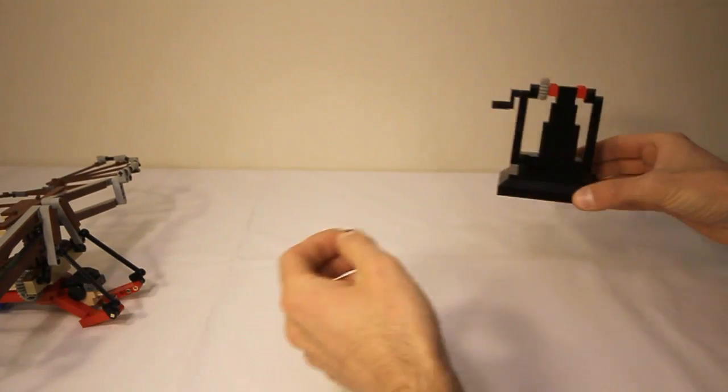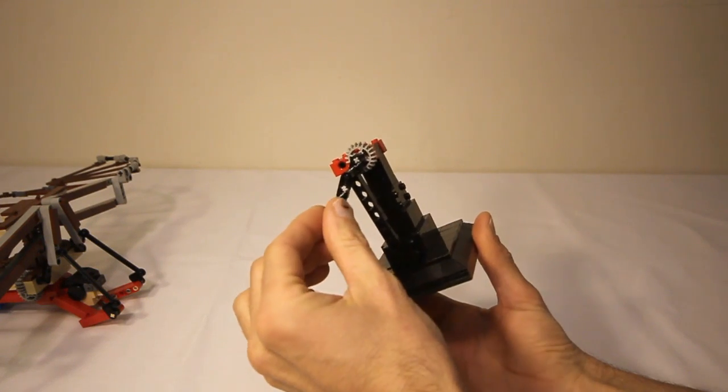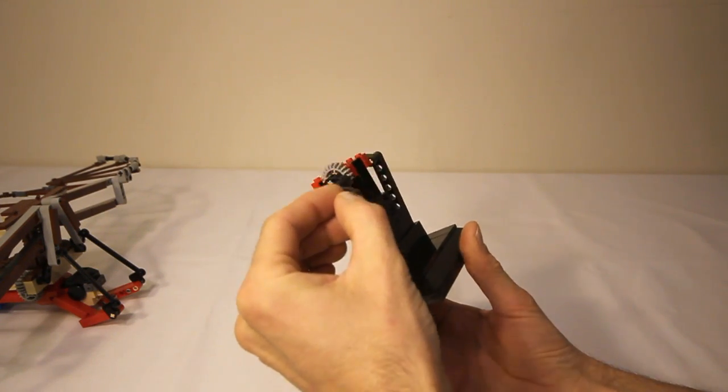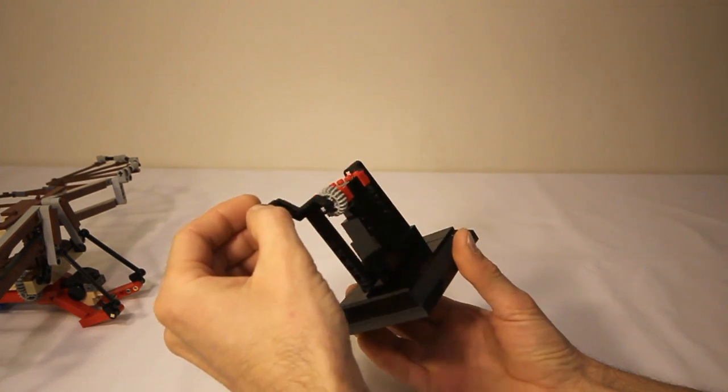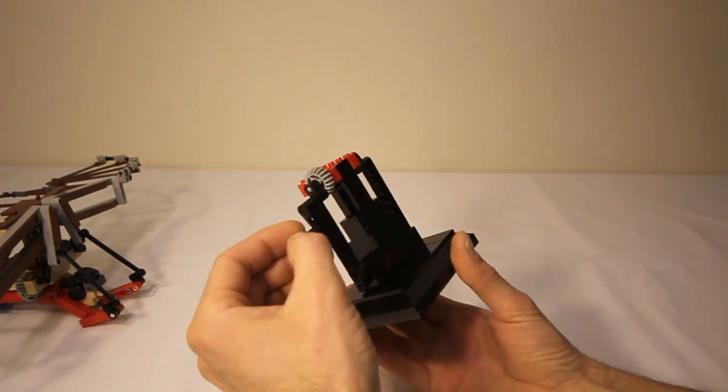If we take a closer look at the stand, you can see I have a simple piston built into it, and that way as the wings flap, the machine will move up and down in time with the flapping of the wings to give a little bit more realism.